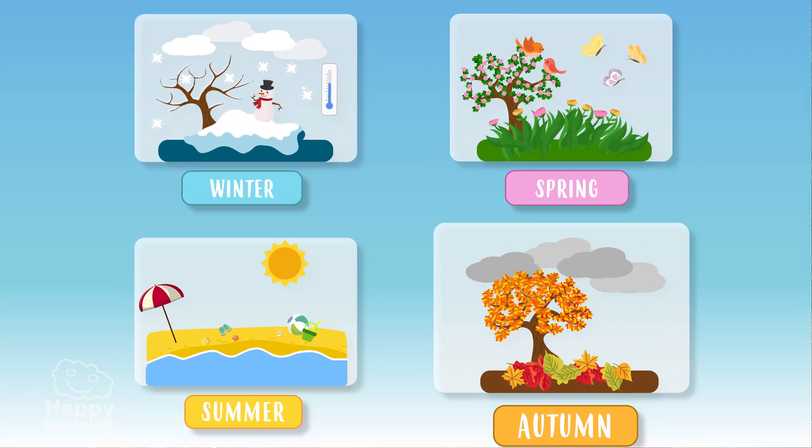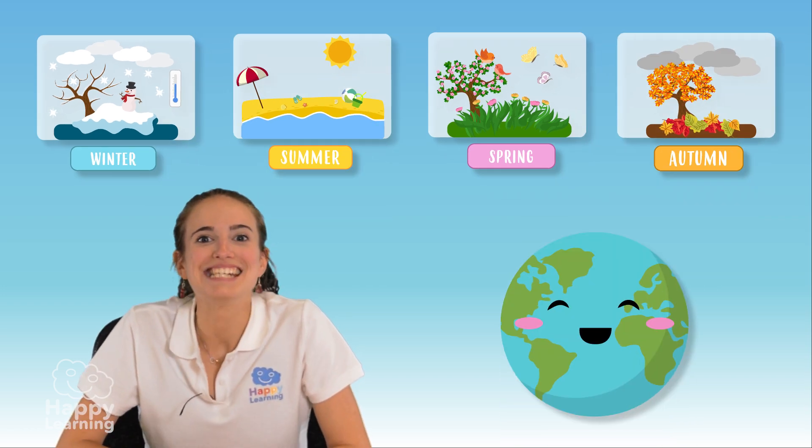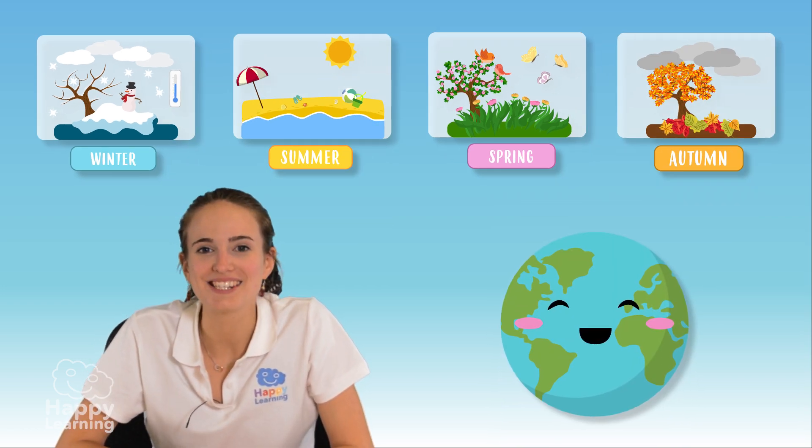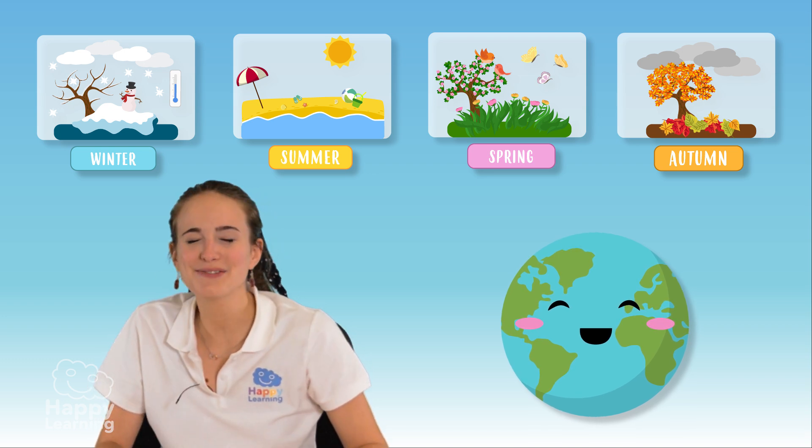In summer it's extremely hot, and in autumn temperatures start to decrease and leaves start falling from the trees. But did you know that not all the seasons happen at the same time all over the world? Nope, so let's find out why!